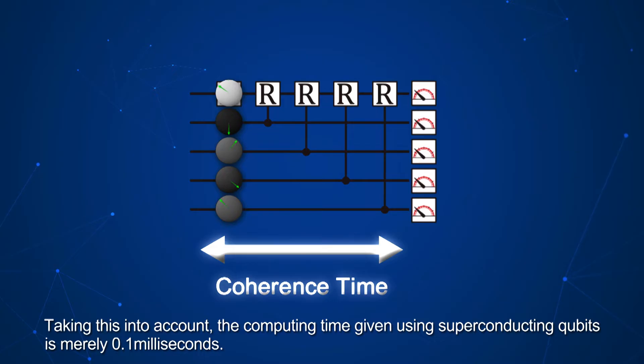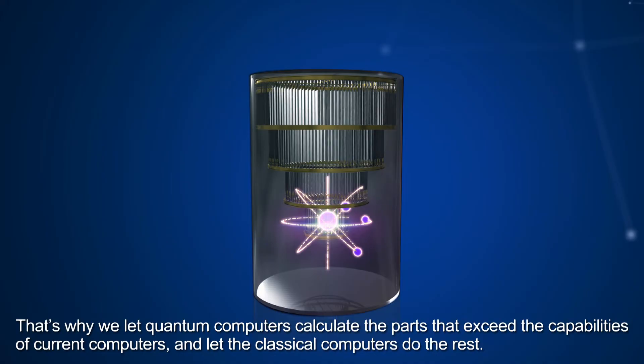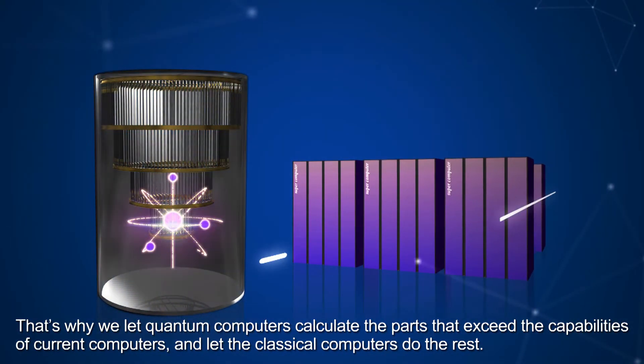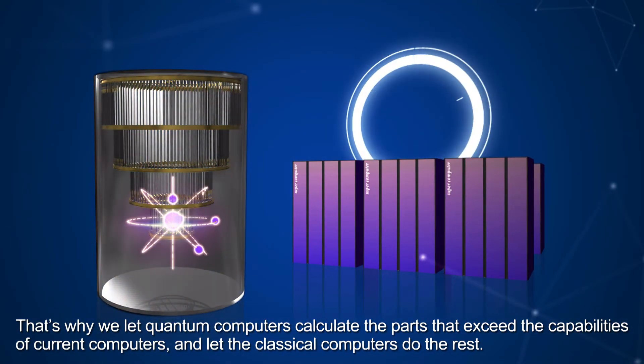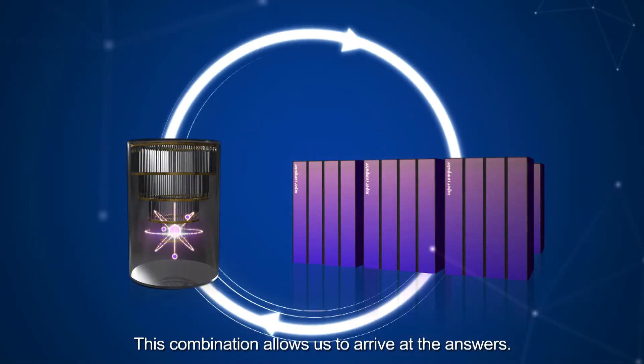Taking this into account, the computing time given using superconducting qubits is nearly 0.1 milliseconds. That's why we let quantum computers calculate the parts that exceed the capabilities of current computers, and let the classical computers do the rest. This combination allows us to arrive at the answers.